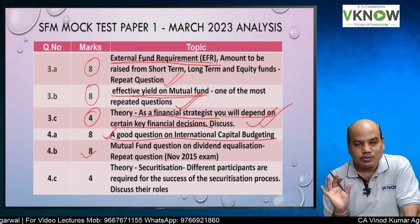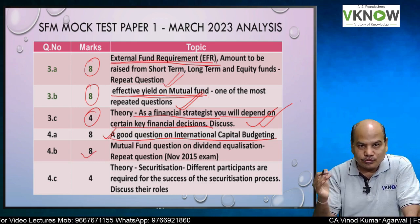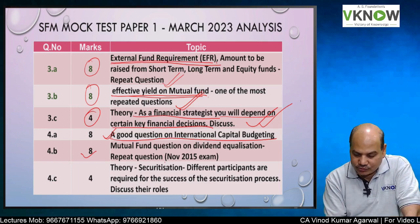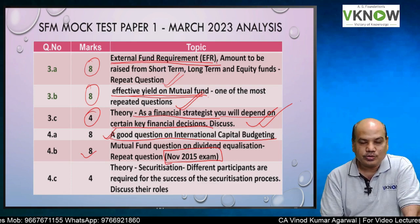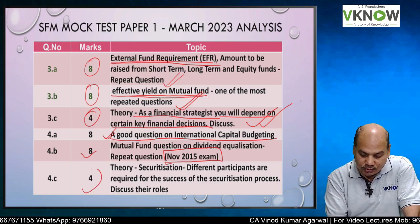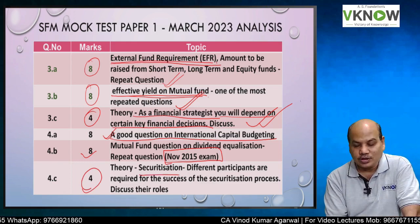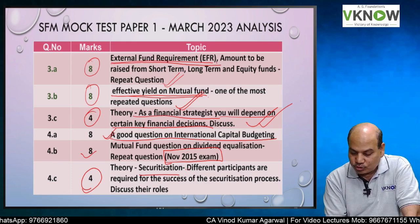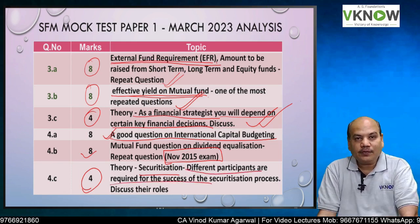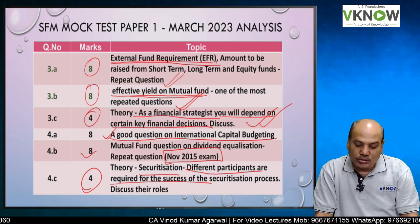Question 4B for 8 marks was again a repeat question on dividend equalization. In the classroom we solve one or two questions on dividend equalization — the same question was asked in an earlier exam in November 2015. Question 4C was the usual theory question on securitization, directly from the study material: who are the different participants required for the success of the securitization process and what are their roles?